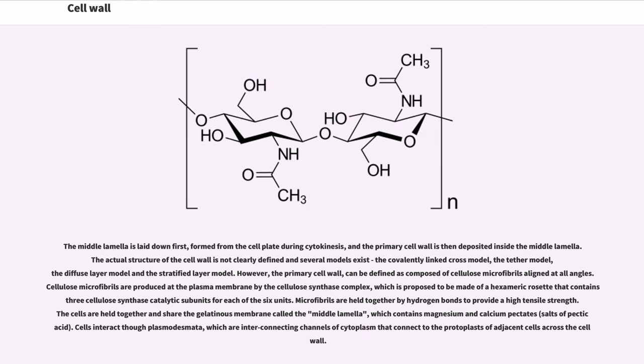The middle lamella is laid down first, formed from the cell plate during cytokinesis, and the primary cell wall is then deposited inside the middle lamella. The actual structure of the cell wall is not clearly defined and several models exist, the covalently linked cross model, the tether model, the diffuse layer model and the stratified layer model. However, the primary cell wall can be defined as composed of cellulose microfibrils aligned at all angles. Cellulose microfibrils are produced at the plasma membrane by the cellulose synthase complex, which is proposed to be made of a hexameric rosette that contains three cellulose synthase catalytic subunits for each of the six units.